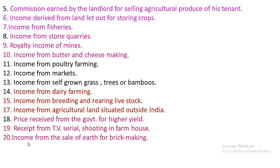Number 17 — Income from agricultural land situated outside India: Any income derived from agricultural land situated outside India shall be treated as non-agricultural income or business income. For example, income received from land situated in Sri Lanka shall be treated as non-agricultural income. Number 18 — Prize received from the government for higher yield: If a farmer receives a prize from the government for higher yield, then it is to be treated as non-agricultural income.